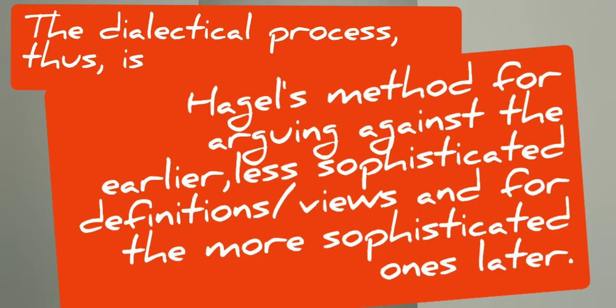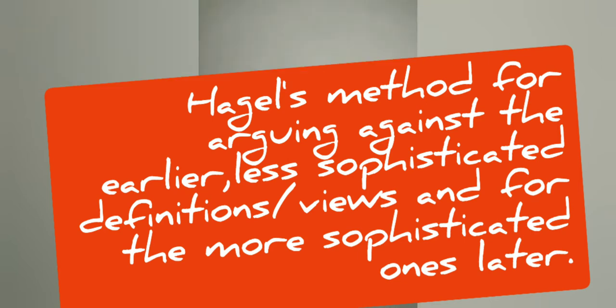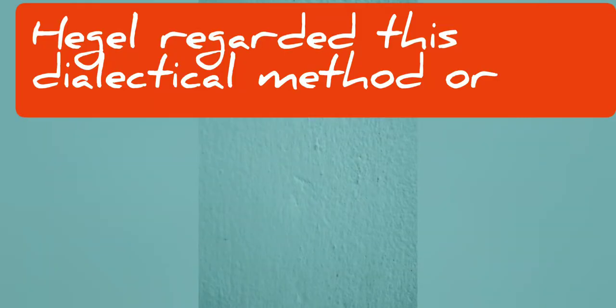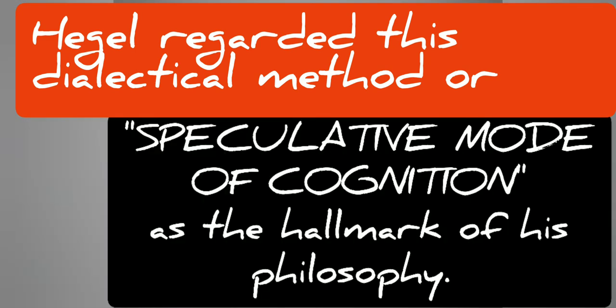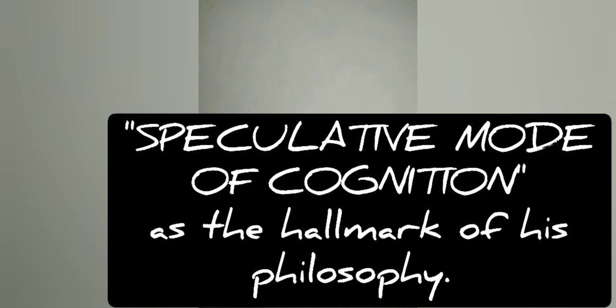Hegel's dialectics produces a linear evolution or development from less sophisticated definitions or views to more sophisticated ones. The dialectical process, thus, is Hegel's method for arguing against the earlier, less sophisticated definitions or views, and for the more sophisticated ones later. Hegel regarded this dialectical method, or speculative mode of cognition, as the hallmark of his philosophy.